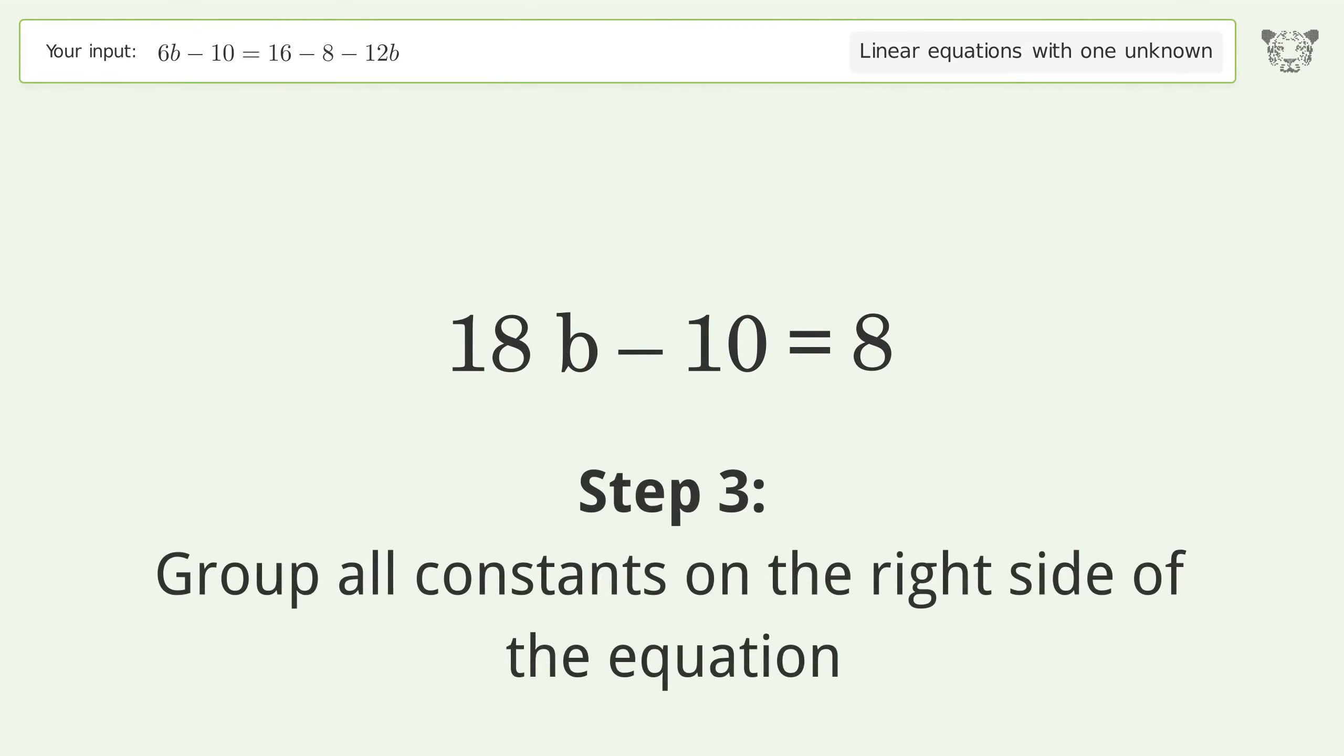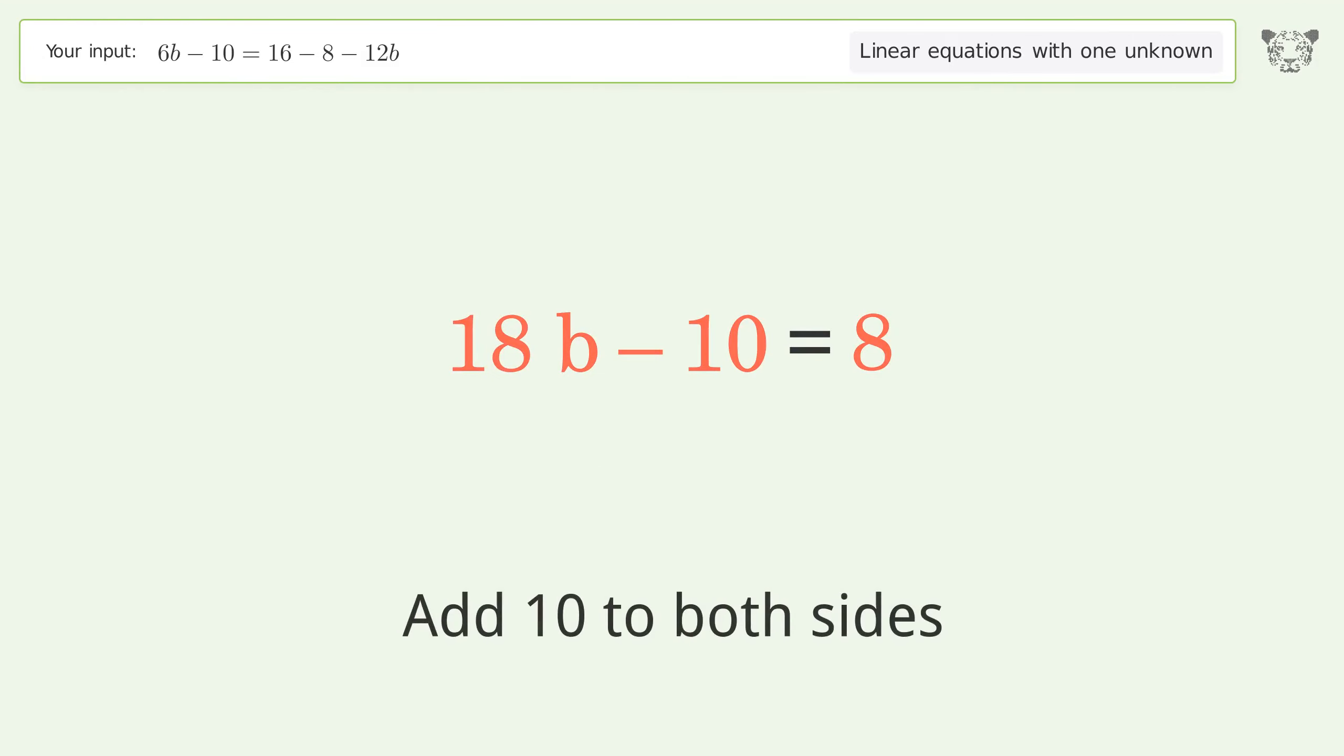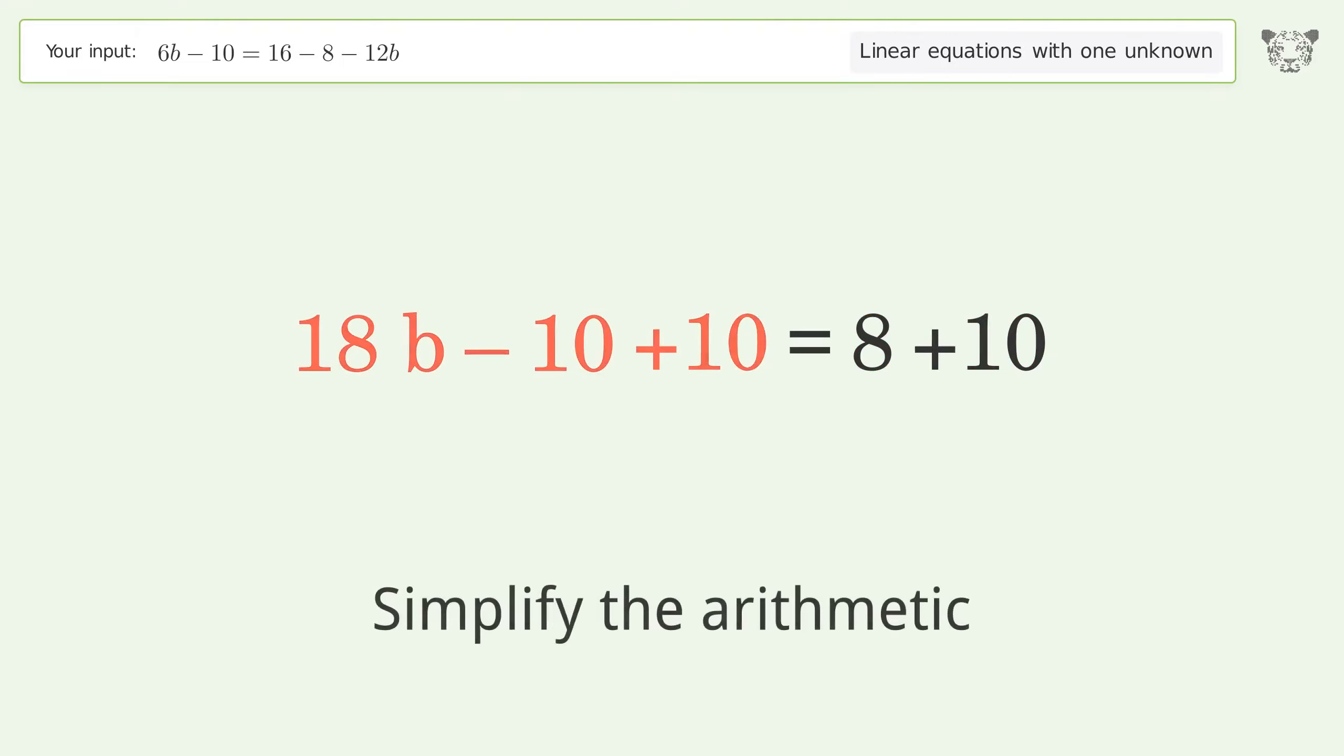Group all constants on the right side of the equation. Add 10 to both sides. Simplify the arithmetic.